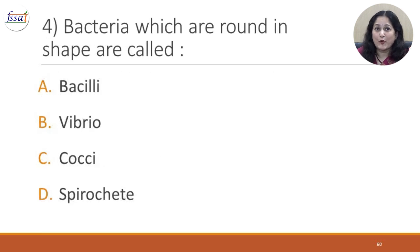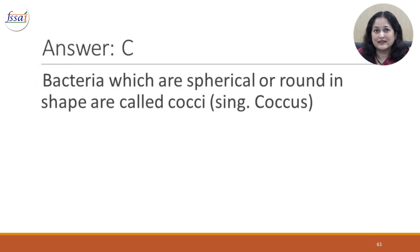Question 4: Bacteria which are round in shape are called — A. Bacilli, B. Vibrio, C. Cocci, D. Spirochete. The correct answer is C. Bacteria which are spherical or round in shape are called cocci, singular coccus.